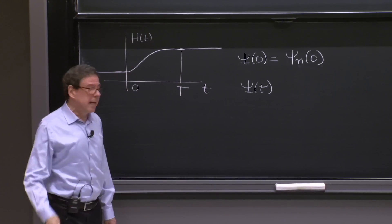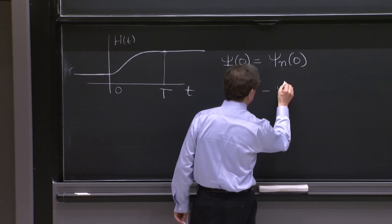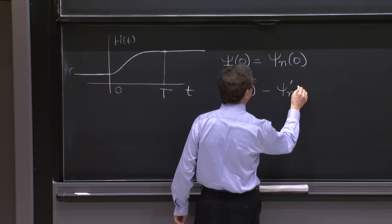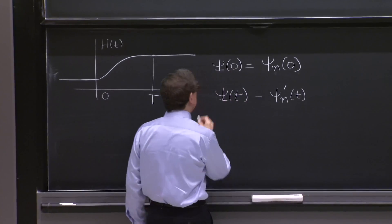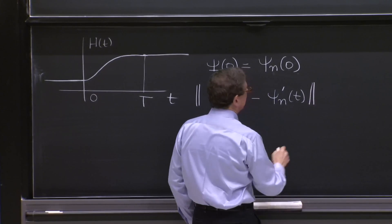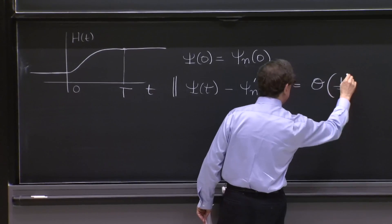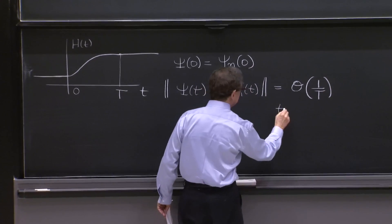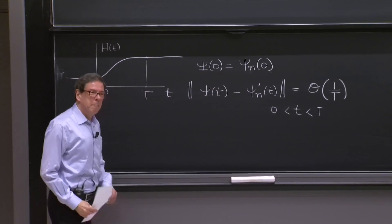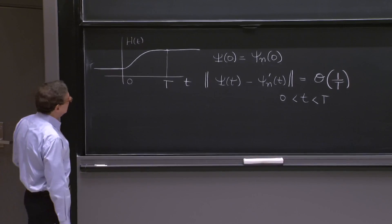And the way it's stated precisely is that psi of t minus, I'll write it like this, psi prime n of t, the norm of this state is of order 1 over t for any t in between 0 and t. So I'm trying to state the adiabatic theorem in a way that is mathematically precise.